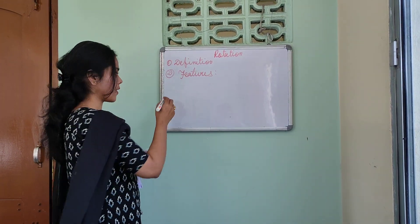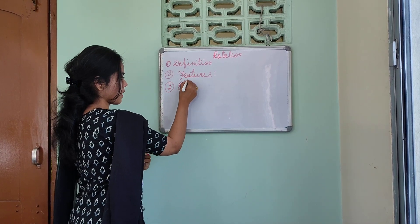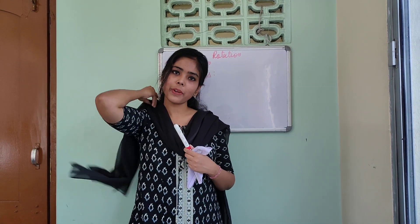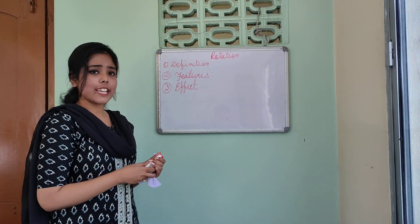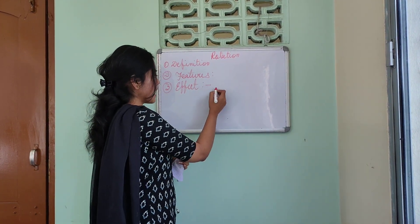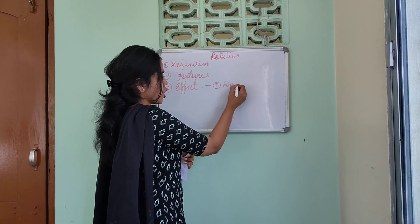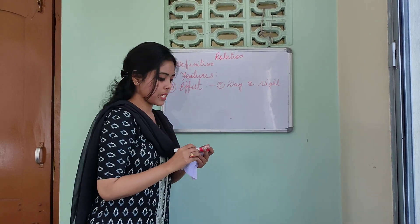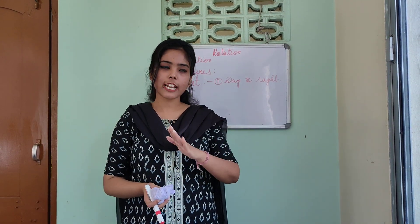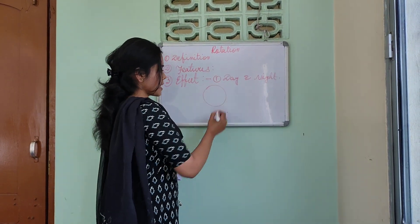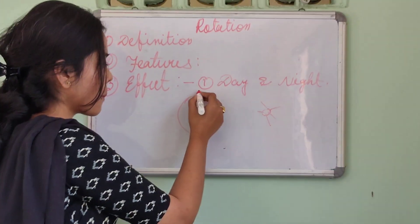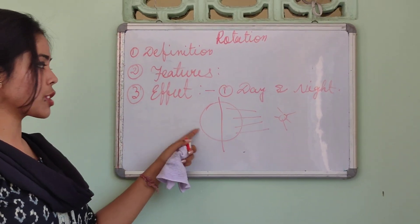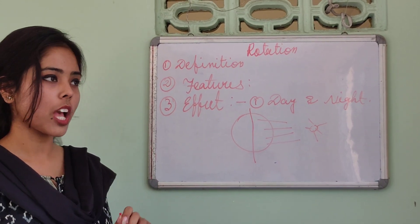The third point is the effects. The consequences of this rotation are huge on our environment and on Earth's surface. First effect is day and night. Without rotation, this phenomenon cannot happen. The part of Earth's surface facing towards the sun will experience daytime, and the opposite side will experience nighttime.